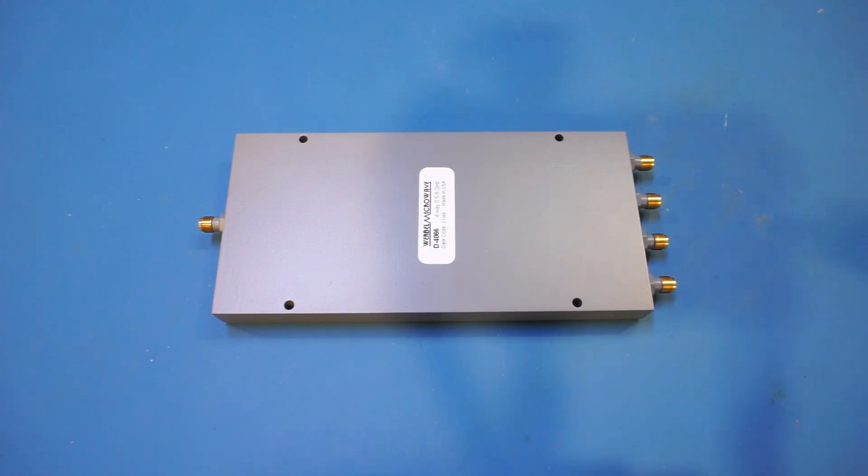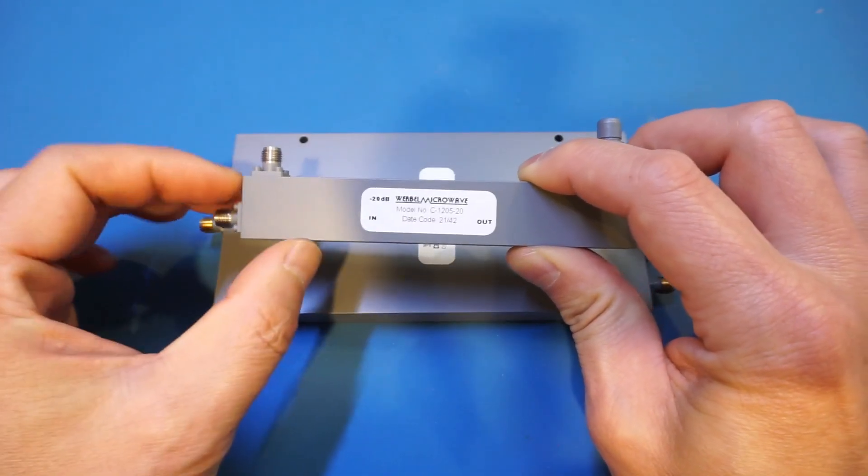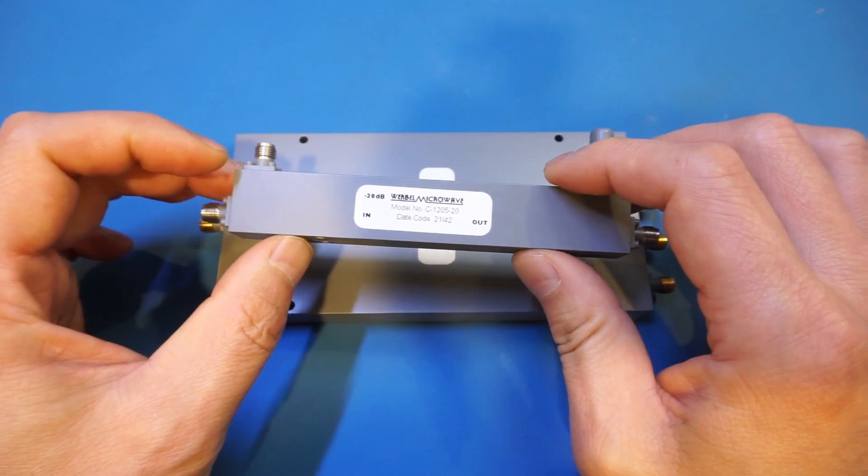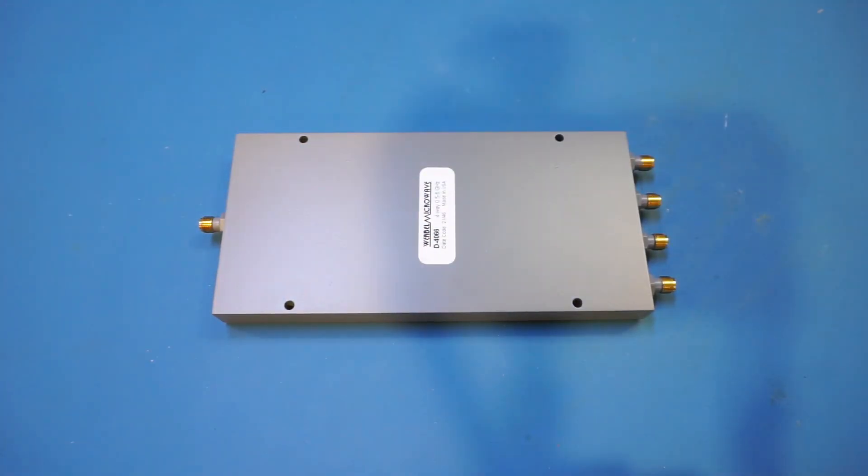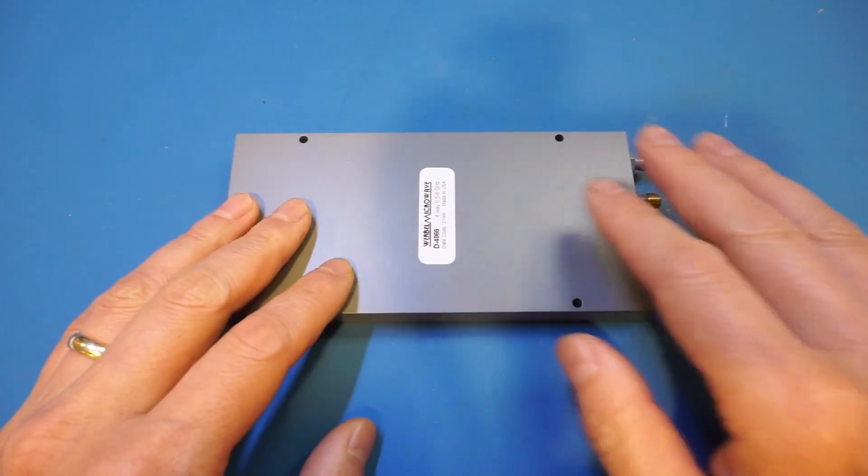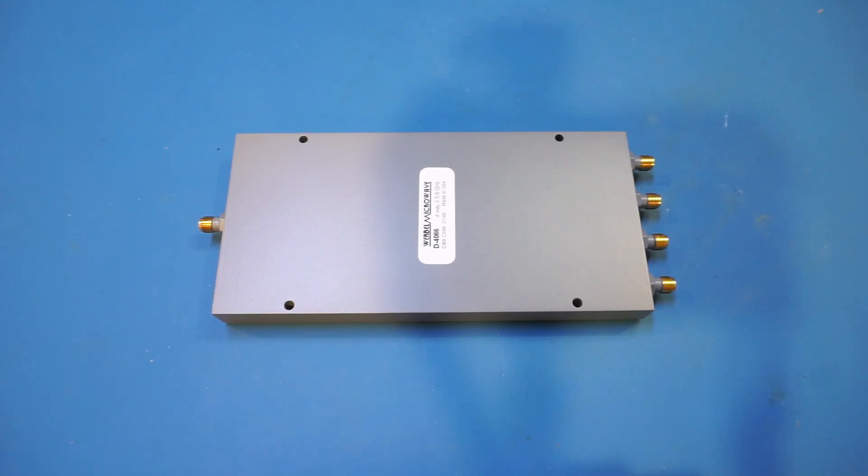Besides the power divider, they also sent me a directional coupler, and this one here is good for frequencies between 500 megahertz and 20 gigahertz with a 20 decibel coupling. I'll have to think of some experiments to do with this one in a future video. Today though, we're going to concentrate on this four-way power divider and combiner and we will do some real world testing and of course take a look at its internals a little bit later.